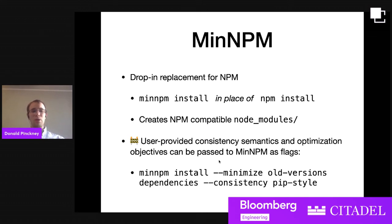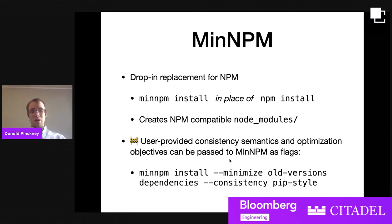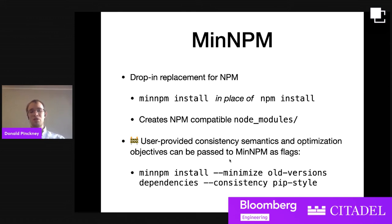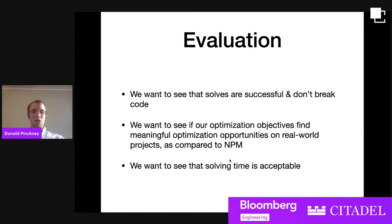MinNPM is a drop-in replacement for NPM. You can use it just in place of npm install. It's totally compatible in terms of creating a valid node_modules directory. The idea is that you can provide user-given optimization and consistency flags via the command line, specifying what minimization criteria you want when you run min-npm install. This is all implemented by shipping queries off to Paxolve as the backend.